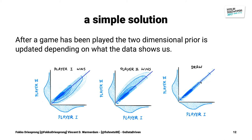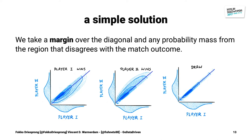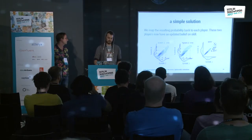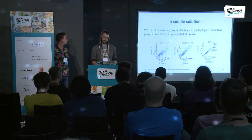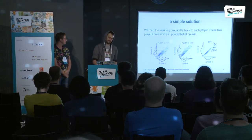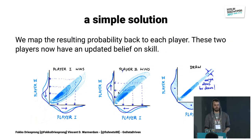The same thing we can do for player two. If we apply some sort of margin, we can also accommodate for draws, because a draw basically says these players might have the same skill. The idea is: we first have a prior, then we measure the game outcome, we have a two-dimensional likelihood, and the only thing we need to do is map it back to a one-dimensional likelihood. So if this player wins, this player's skill will shift to the right and the other will shift to the left, and vice versa.